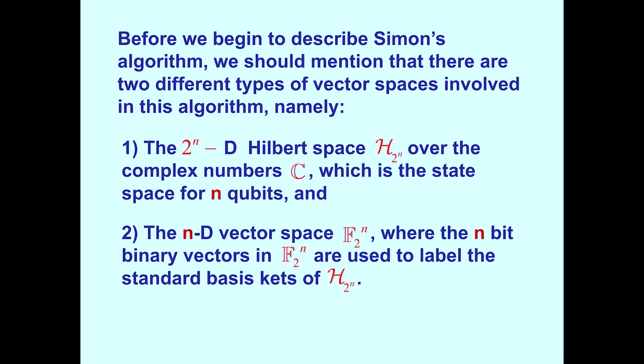Okay, also before beginning, we should mention that there are two different types of vector spaces involved in this algorithm. The first is the 2 to the n-dimensional Hilbert space H sub 2 to the n over the complex numbers C, which is the state space for n qubits. The second is the n-dimensional vector space Blackboard F sub 2, over the field of two elements, where the n bit binary vectors in F2^n are used to label the standard basis kets of H sub 2^n. I hope there'll be no confusion as to how the two vector spaces are used.